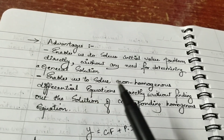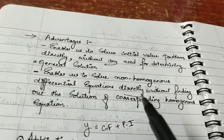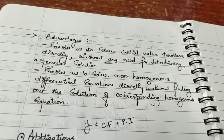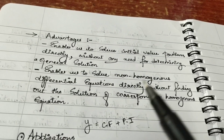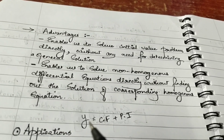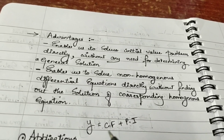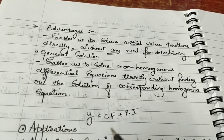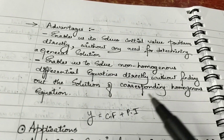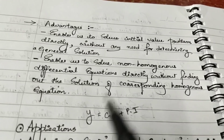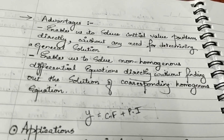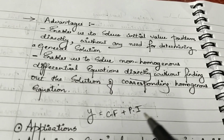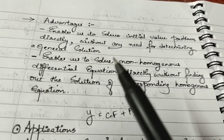It also enables us to solve non-homogeneous differential equations directly without finding out the solution of the corresponding homogeneous equation. The general form of solution for a non-homogeneous differential equation is Y = CF + PI, where CF is the complementary function and PI is the particular integral. When we use Laplace transform, we can skip finding the complementary function and particular integral and directly obtain the solution.